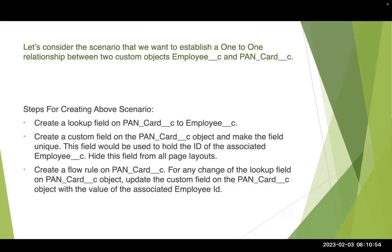Let's take one scenario to establish a one-to-one relationship between two custom objects. I am taking Employee and PAN Card. First, we must create a lookup field from PAN Card to Employee. Next step, after creating the lookup field, we must make the PAN Card custom field unique, and it must hold the ID of the employee.